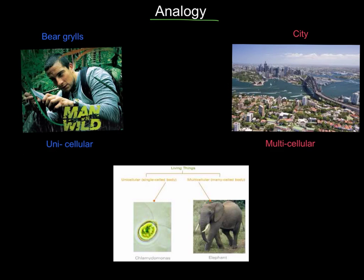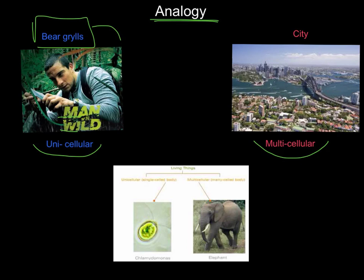I'm going to cover a quick analogy that compares unicellular with multicellular. If you know who Bear Grylls is, he's a man from the show Man vs. Wild, and he's basically famous for being able to survive by himself in nature. He uses nature to get all the things he needs — food, shelter, and everything else. He's just one man and he can survive versus the wild. So Bear Grylls would be an example of unicellular — he can do everything by himself.